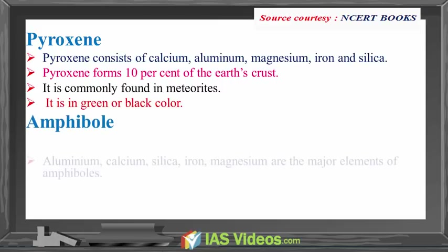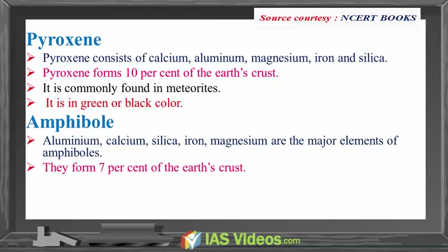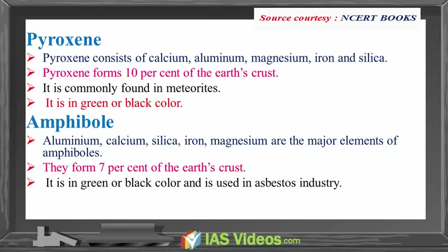Amphibole: aluminum, calcium, silica, iron and magnesium are the major elements of amphiboles. They form 7% of the earth's crust. It is green or black in color and is used in the asbestos industry. Hornblende is another form of amphiboles.